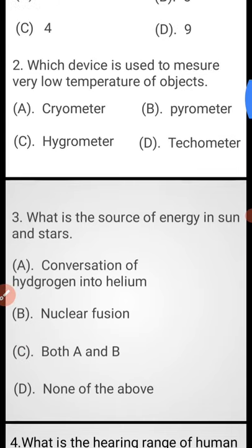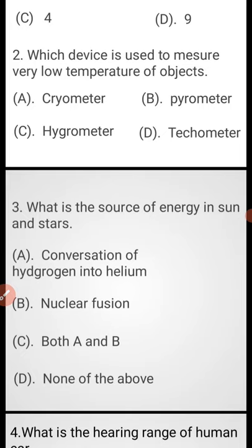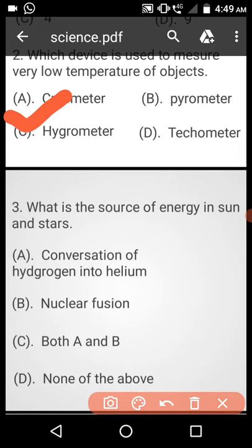Question number 2: Which device is used to measure very low temperature of objects? Option A: Cryometer, Option B: Pyrometer, Option C: Hygrometer, Option D: Thermometer. Answer is Option A.